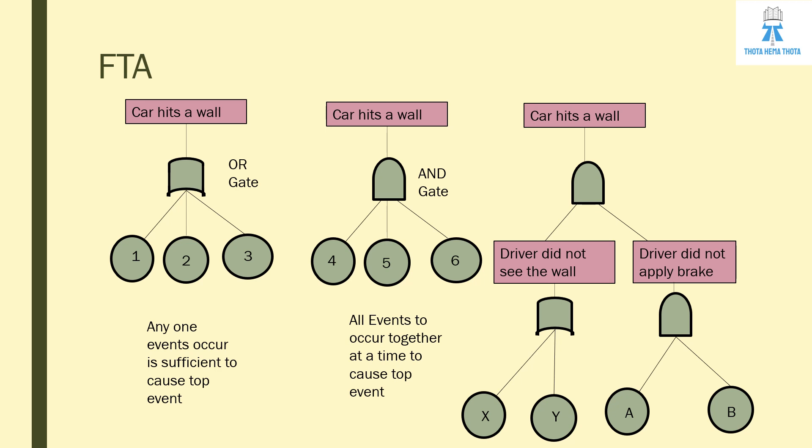Here is an example of FTA. In the first diagram, we have an OR gate — meaning any one of events one, two, or three occurring is sufficient to cause the top event. The second condition shows an AND gate — meaning all events must occur together simultaneously to cause the top event. That means events four, five, and six must all happen at once for the top event to occur.